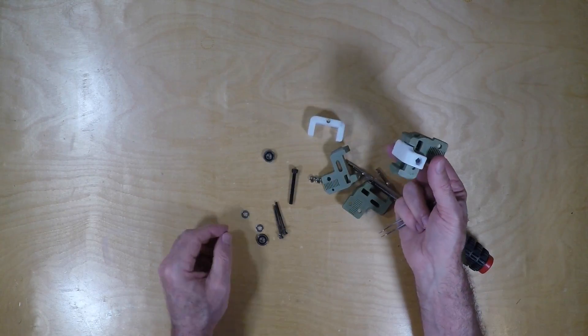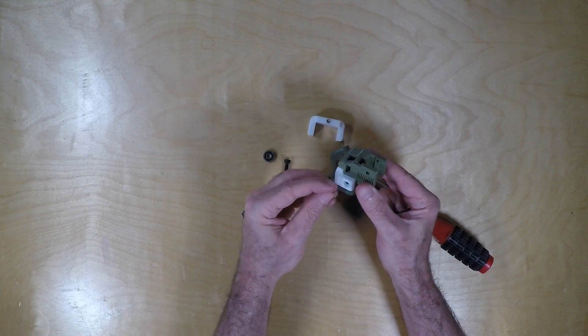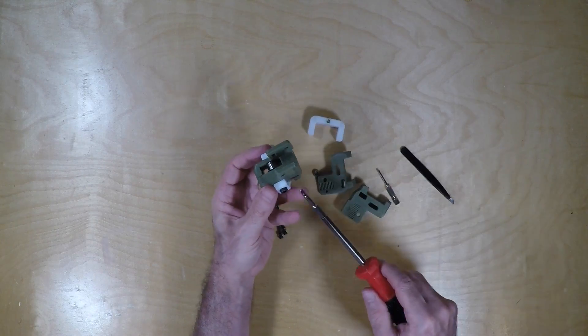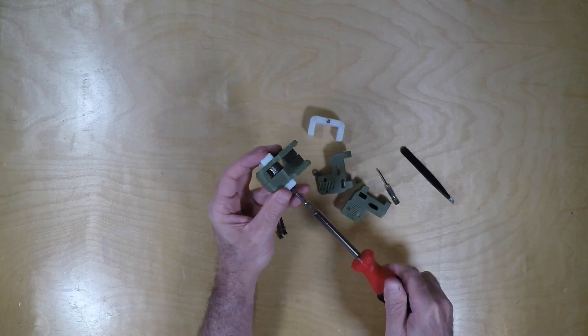Once the washers and bearings are in, simply add the nut and tighten this, although not too much. We'll be adjusting these later.